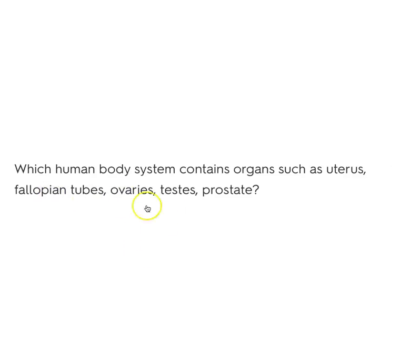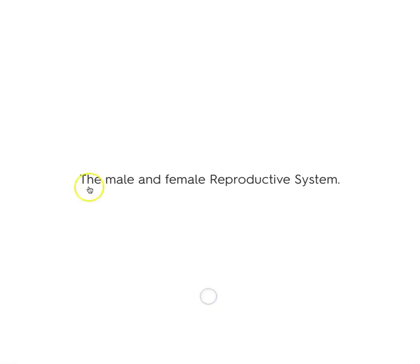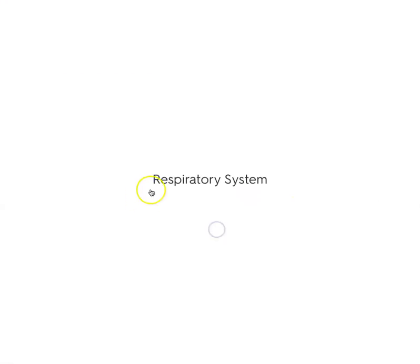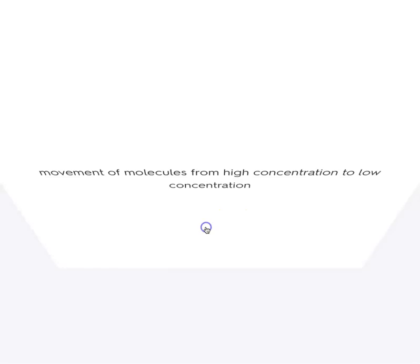Which human body system contains organs such as the uterus, fallopian tubes, ovaries, testes, and prostate gland? The male and female reproductive system. Which human body system contains the lungs? The respiratory system.